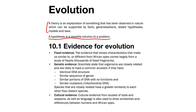There are three types of evidence for evolution. The first one being fossil evidence, which shows that characteristics making us similar to or different from African apes come largely from a study of fossils. Thousands of fossil fragments have been found all around the world, though mainly in Africa.